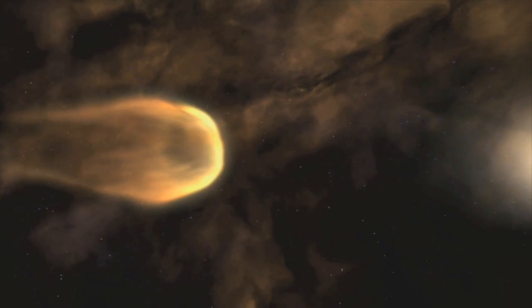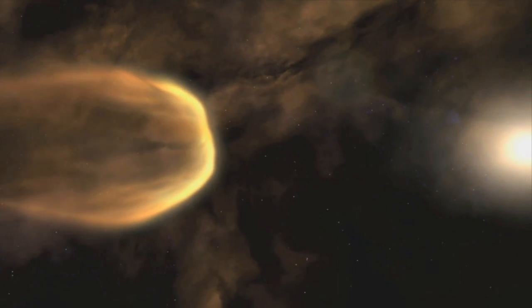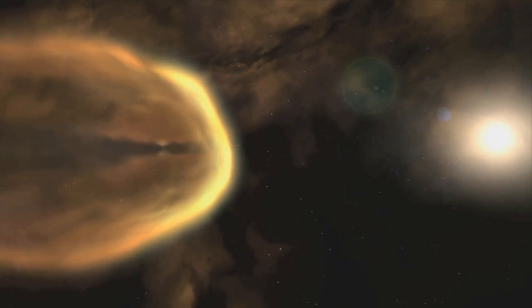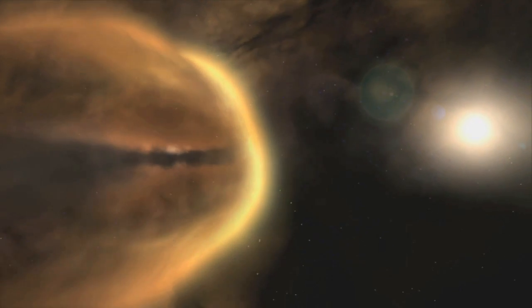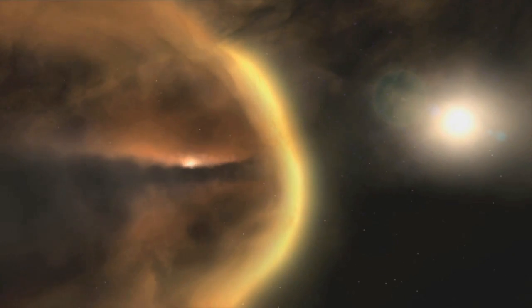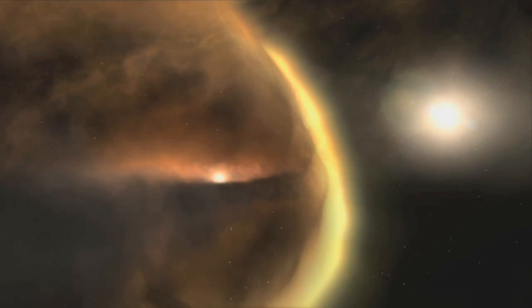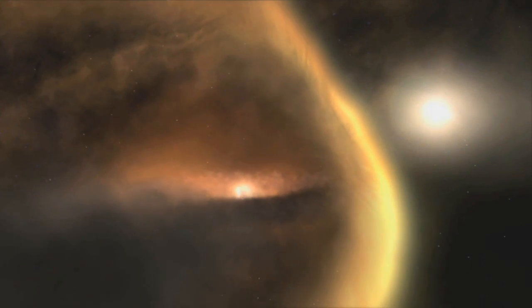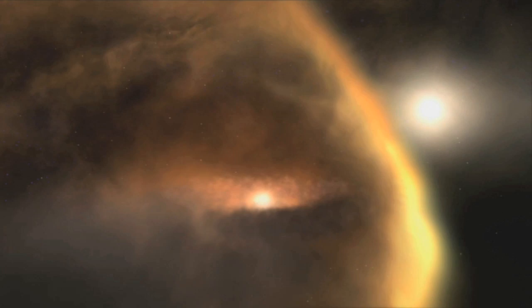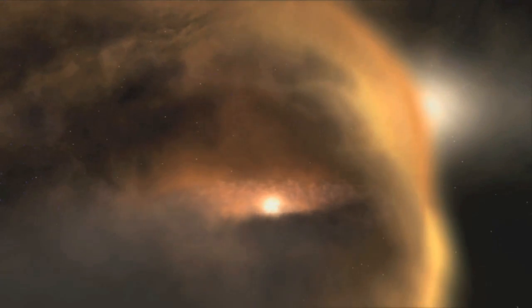The bright star that illuminates some of the proplids, allowing us to see them, is both a blessing and a curse. The powerful radiation that lights them up also threatens their very existence, as the disk material, once heated up, is very likely to dissipate and dissolve, destroying their potential to become planets.